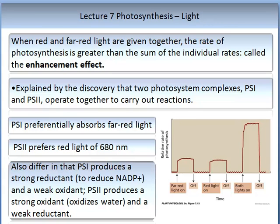Photosynthesis has some interesting characteristics. When red and far-red light are given together, the rate of photosynthesis is greater than the sum of the individual rates — this is called the enhancement effect. It is explained by the discovery of two photosystem complexes, Photosystem 1 and Photosystem 2, which operate together. Photosystem 1 prefers the absorption of far-red light, while Photosystem 2 prefers the absorption of red light at 680 nanometres.